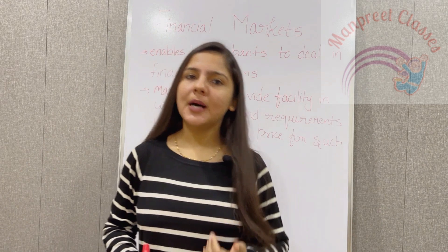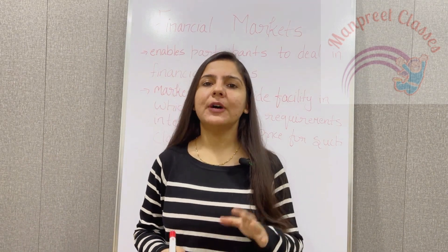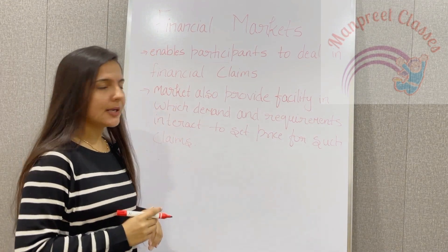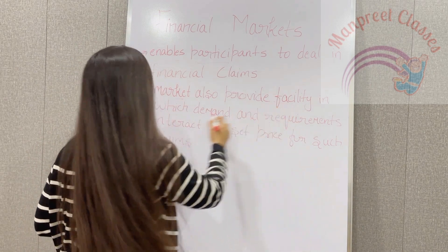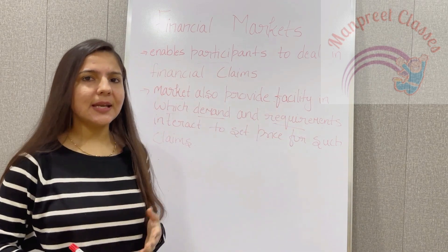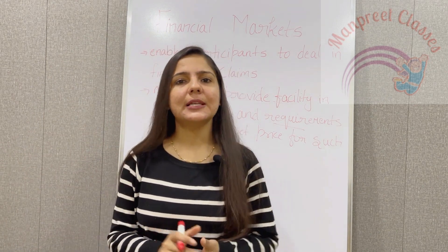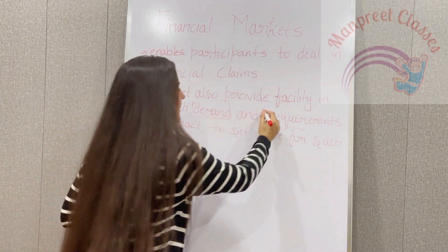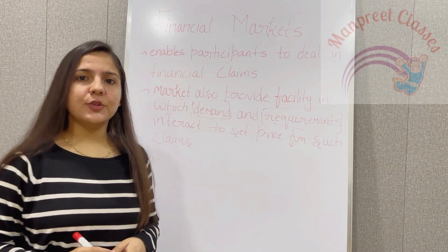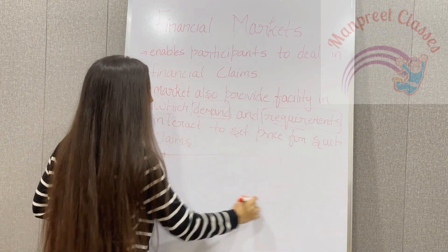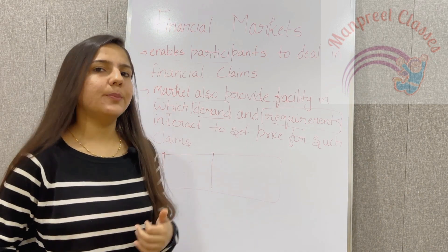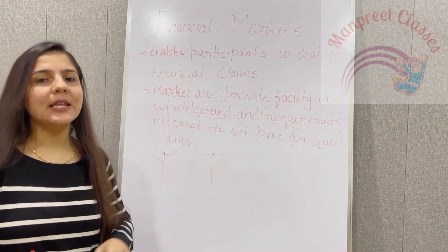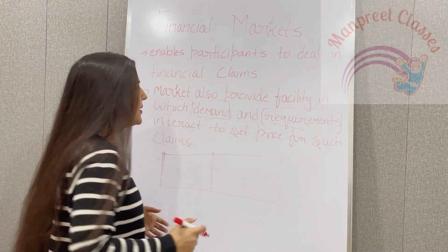What is a financial market? It enables participants to deal in financial claims. The market which enables participants to deal in financial claims is a financial market. It provides facilities in which demand and requirements interact to set a price for such claims. The participants on the demand and supply side are brokers, dealers, borrowers, agents, and savers.